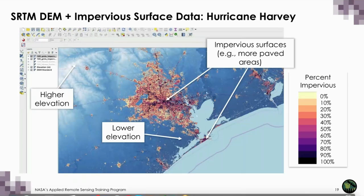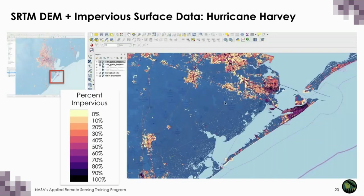Here we have a zoomed version showing the Houston area in Texas, with low elevation shown in darker blue for SRTM and different levels of impervious surfaces. The more impervious the surface, the darker it is — dark purple or black is the most impervious. We can see the network of roads, which appear black, within the Houston area. Here's an even more zoomed-in version showing Galveston Island, where you can appreciate a larger level of detail and the extent of the impervious surfaces in this small area.